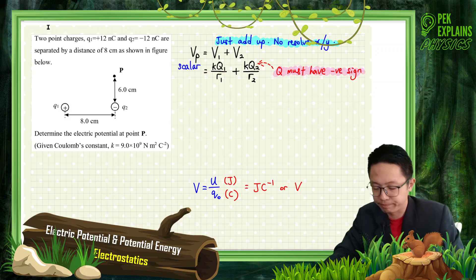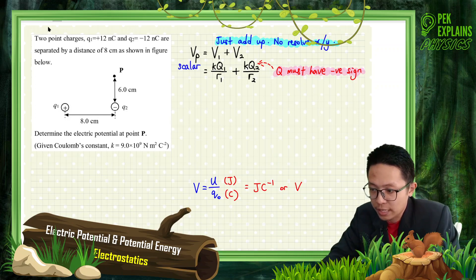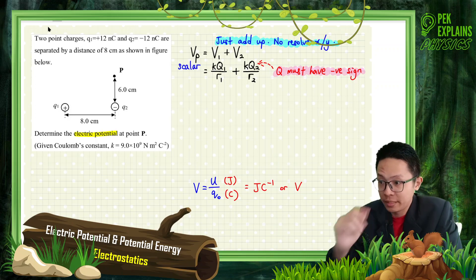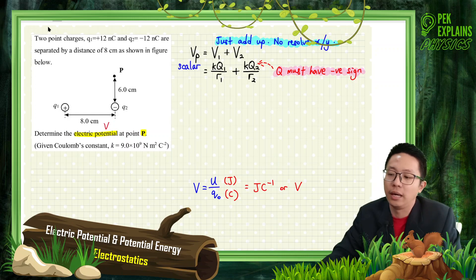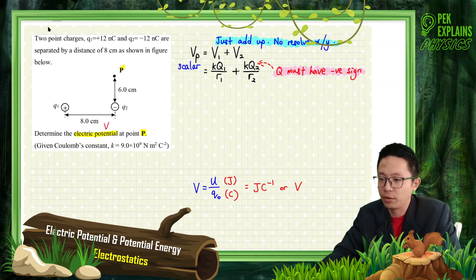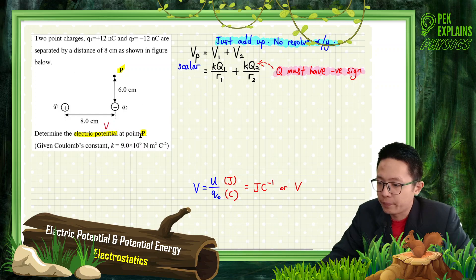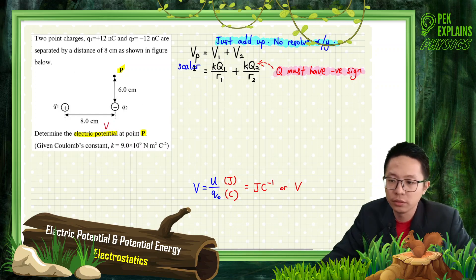We have to pay close attention to what the question asks. It asks for the potential — V — at point P. The formula for potential is KQ over R.